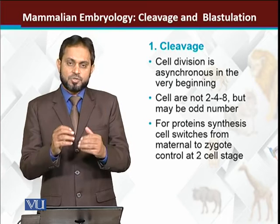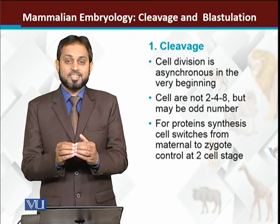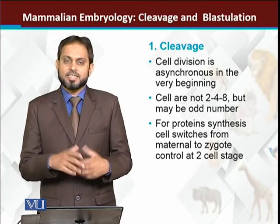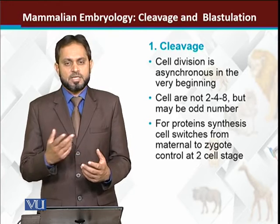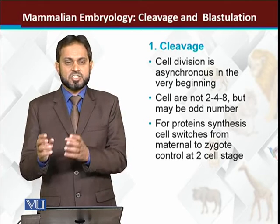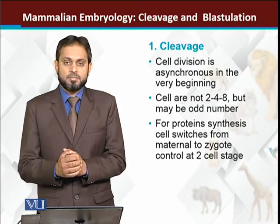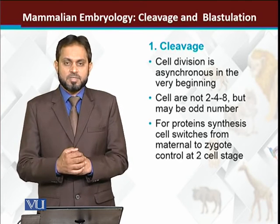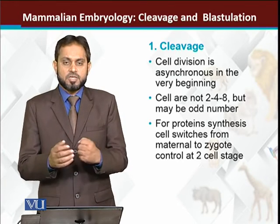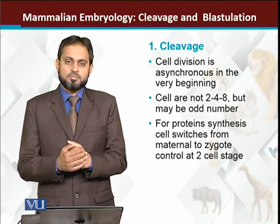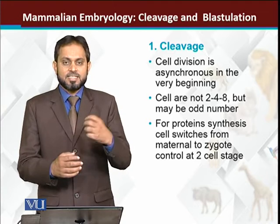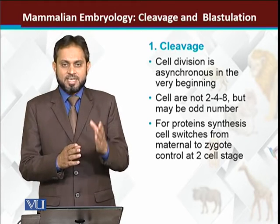The cleavage pattern is rotational cleavage, and importantly, the cells are not dividing synchronously. Some cells divide earlier and some divide later. Because of this, we do not get the regular 2, 4, 8, 16 cell stages. Sometimes we can get odd-numbered stages — for example, going from 4 cells to 5 cells, or even a 4 to 7 cell stage, because one cell may divide slowly.